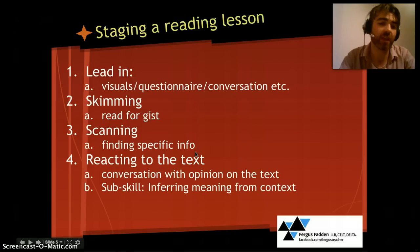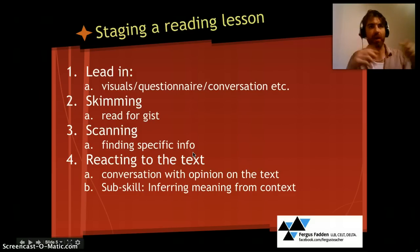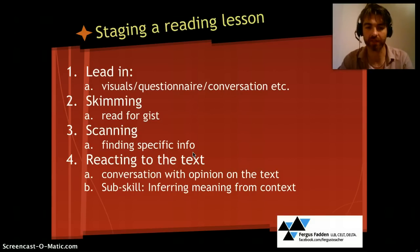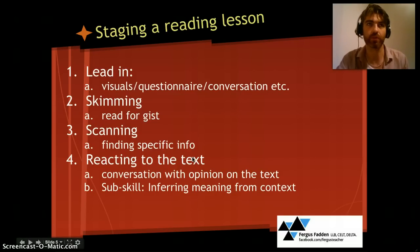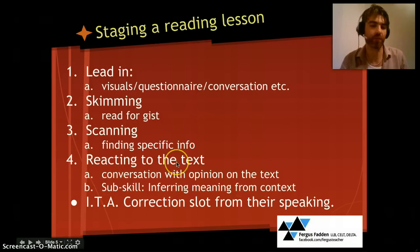You could also develop the further subskill of inferring meaning from the text — some vocabulary that wasn't a blocking item but may still be new for the student. You can prepare questions like 'Look in paragraph 3, find a word that means...' This helps develop students' confidence and ability to infer meaning from context, which is an extremely useful subskill for any learner hoping to become more autonomous. Finally, ITA — if time allows, a correction slot from their speaking, taking notes during conversation and giving feedback at the end.